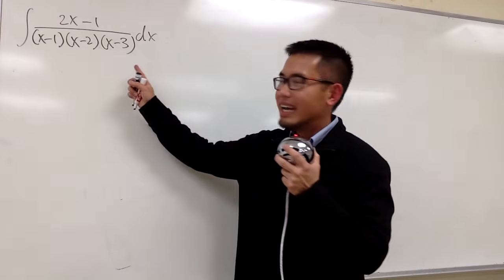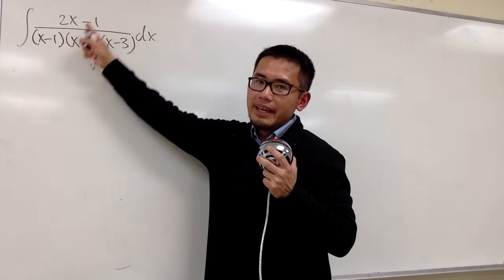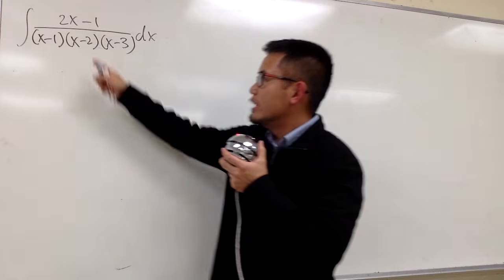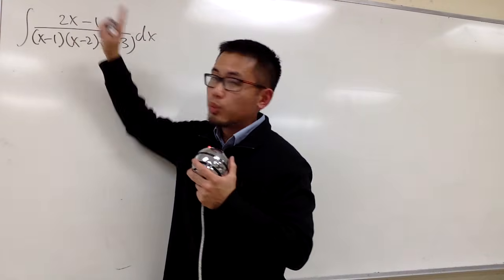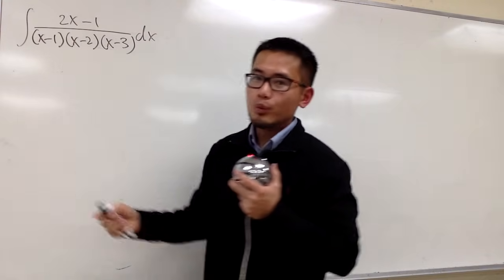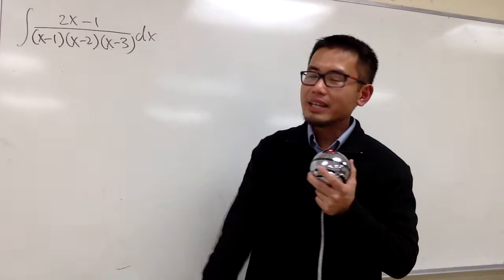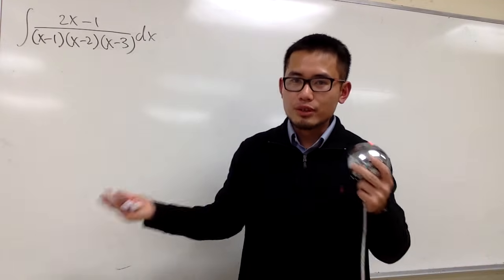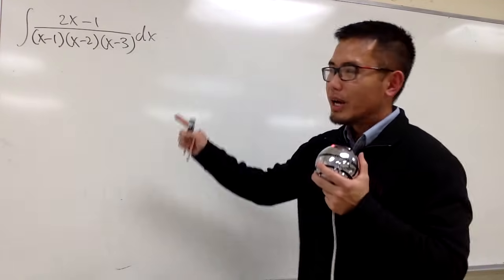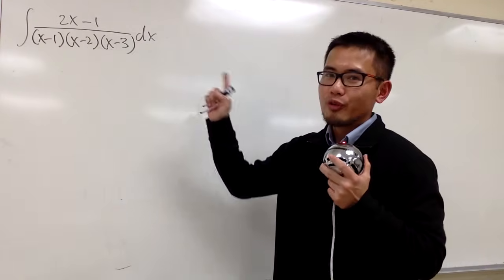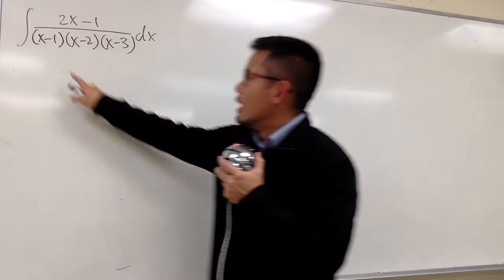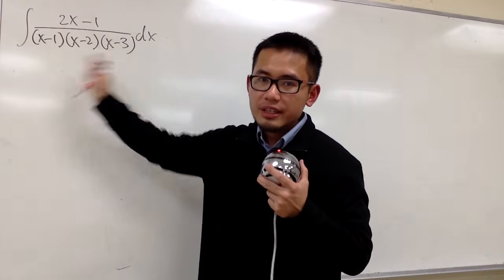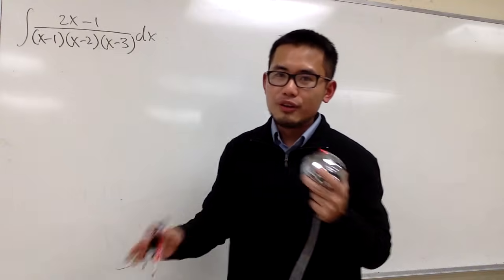Let's go ahead and integrate this. You can see that the integral right here is a rational expression. The degree on the top is just 1, and the degree on the bottom is 3, because x times x times x gives us x to the third power. All the factors in the denominator are linear and they are all different.